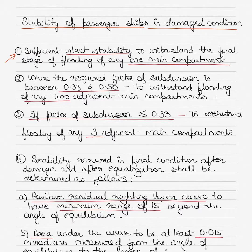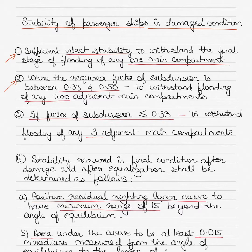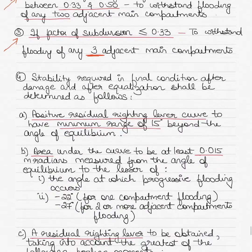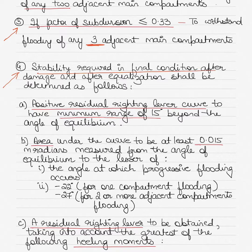I'll elaborate on each of these points and also draw a GZ curve which will explain things further. The second point is where the required factor of subdivision is between 0.33 and 0.50 — the intact stability should be sufficient to withstand flooding of any two adjacent main compartments. If the factor of subdivision is less than or equal to 0.33, the intact stability should be sufficient to withstand flooding of any three adjacent main compartments.